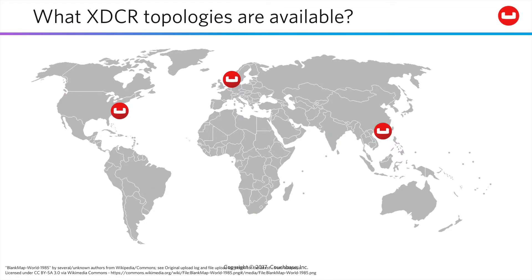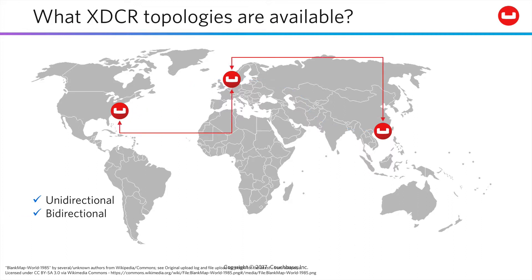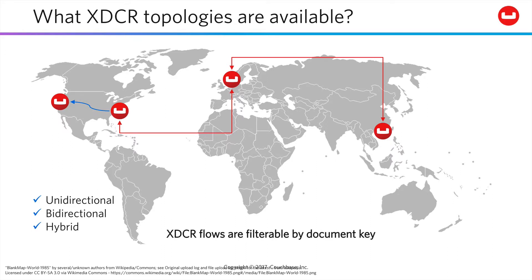How can you go about constructing your XDCR plumbing? These bucket-to-bucket pipelines can be unidirectional, bidirectional for a master-master configuration, or a hybrid of both. When you add in the fact that these can be filtered by document ID, you've got a lot of control over your data pipes.